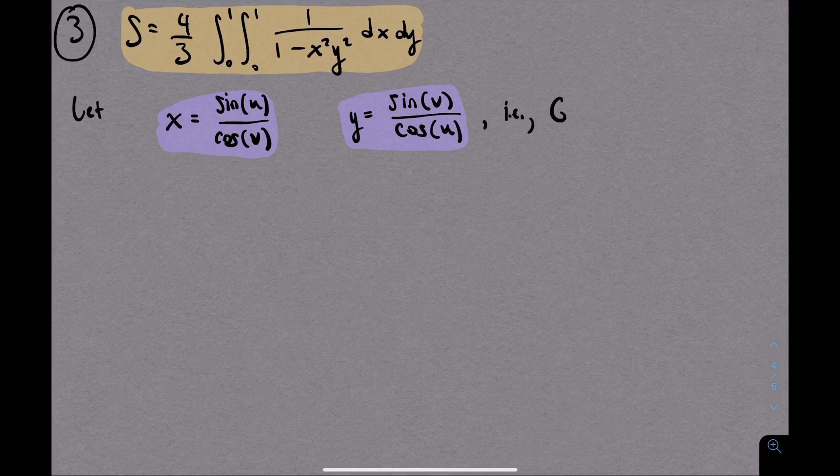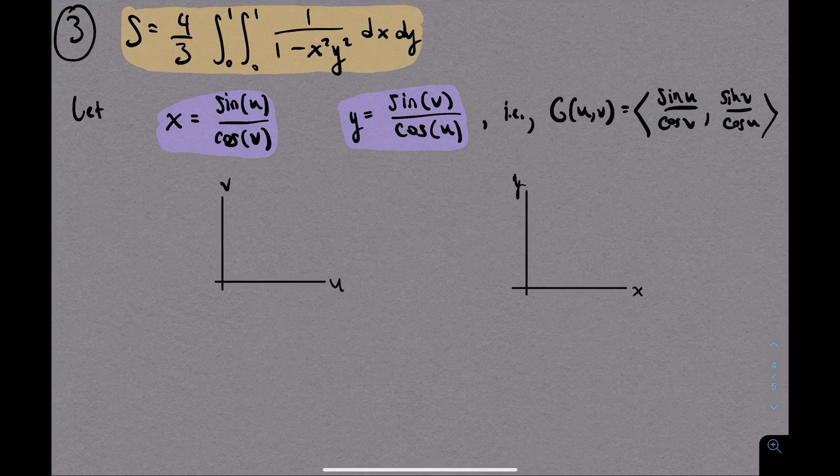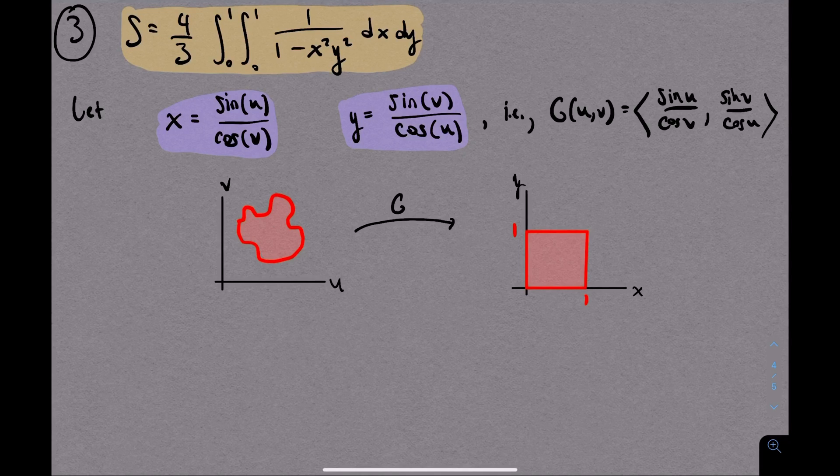But just to be clear, what this represents is a map from the uv world to the xy world. The region we're integrating over in the xy world is a unit square, and one of the difficult things that we'll have to figure out with this substitution is what the corresponding region in the uv world is. But I'm actually going to save that step for last.